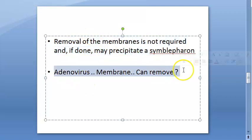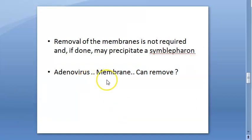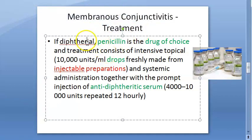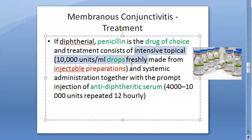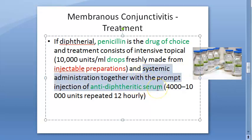Removal of the membrane is not required, especially if it is a true membrane, as it can lead to bleeding. Pseudomembranes — such as in adenovirus — can be removed more easily. For treatment, if it is diphtherial, penicillin is the drug of choice. An injectable preparation is used to freshly prepare drops, with intensive topical and systemic administration, along with prompt injection of anti-diphtheric serum.